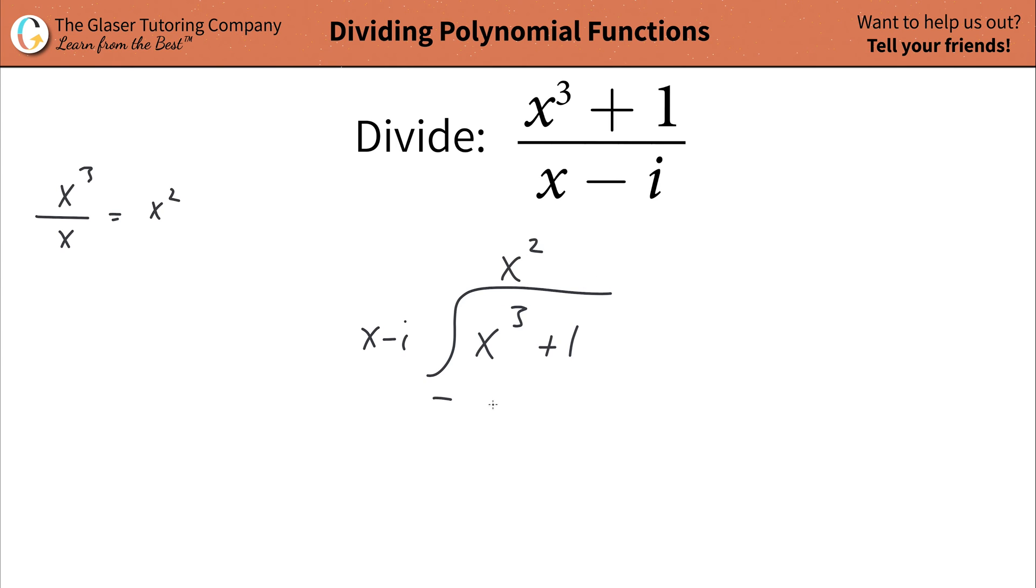Then you're going to set up your parentheses and take this quotient and multiply it by this divisor. When you do the multiplication, x squared times x is going to be x cubed. x squared times negative i is going to be negative x squared i. This is the term now that goes inside of your parentheses. So write x cubed minus x squared i.